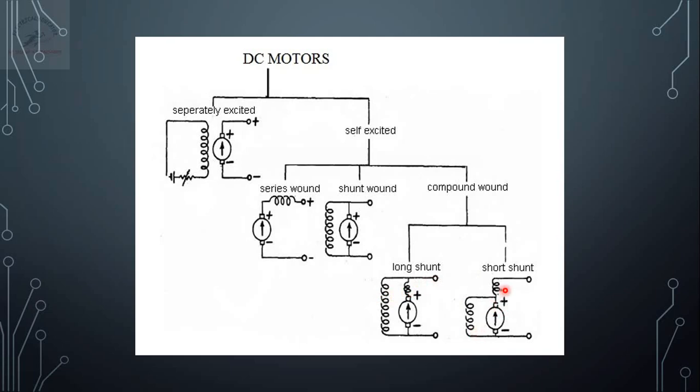An important observation: the series winding contains fewer turns than the shunt winding. In a series wound machine, the armature current flows directly through the series field, so the current is high and we don't need many turns to establish the required flux. In the shunt field, the current is less than the armature current, so we need more turns to establish the same flux. While drawing the circuit diagram, do not make the mistake of drawing equal turns — series field must have fewer turns than shunt field.